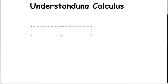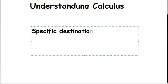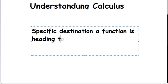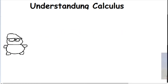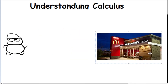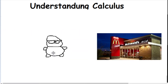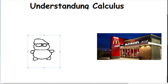So a limit is basically a destination that a function is heading towards. Think about this little fat boy — he wants to go to McDonald's, so he's heading towards McDonald's. But a function has two sides next to a point.